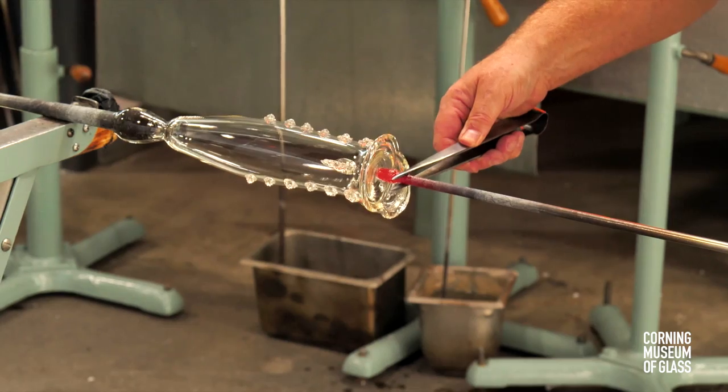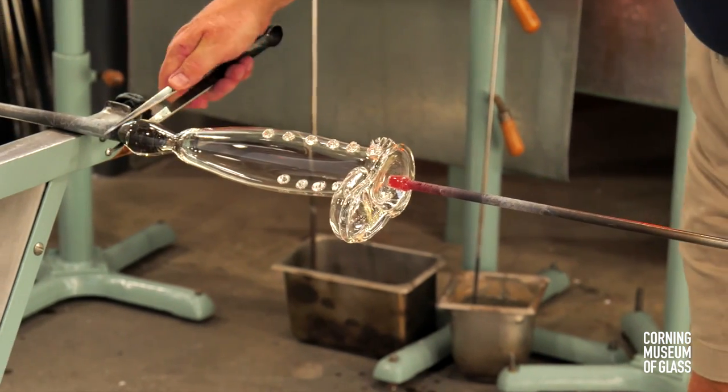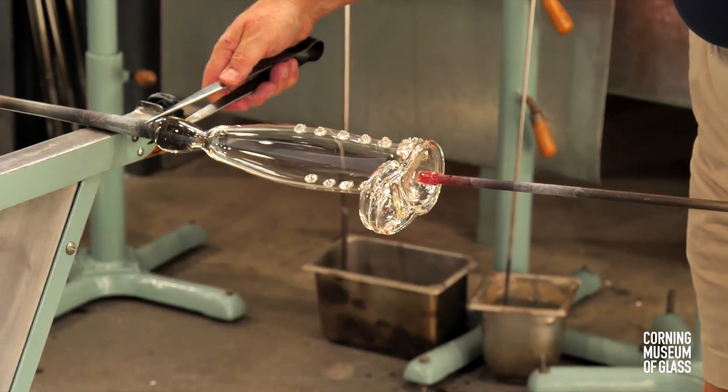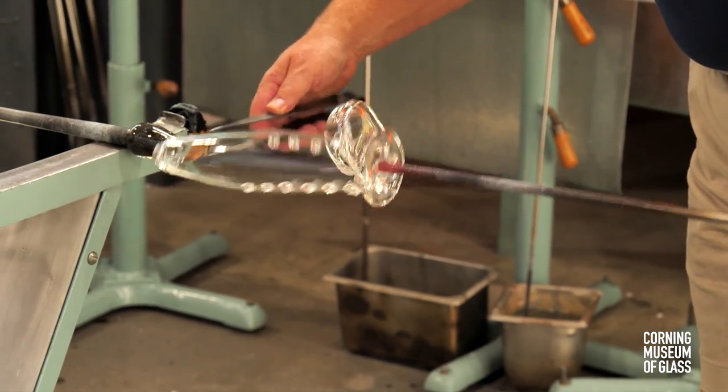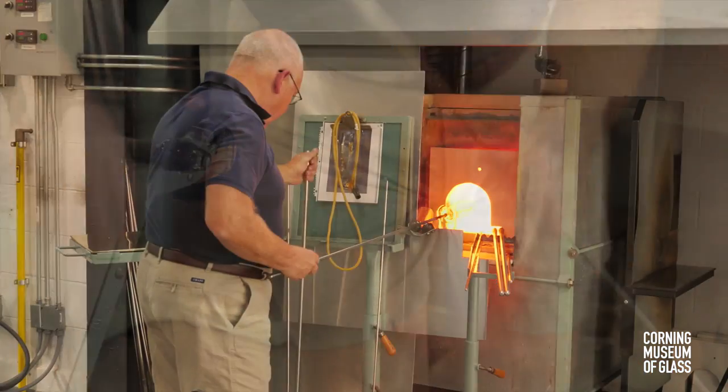The punty is attached to the bottom. The pincers held in the constriction, the blowpipe tapped, and the vessel breaks free of the blowpipe.